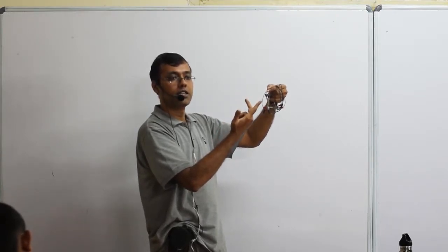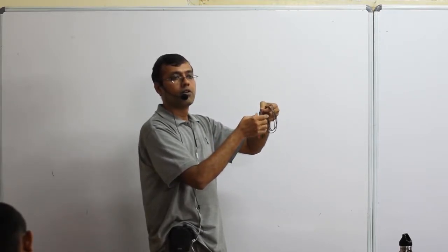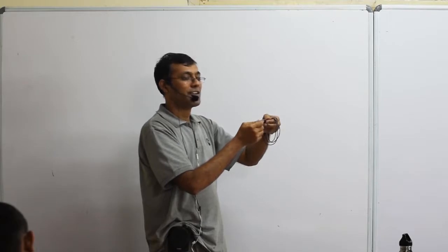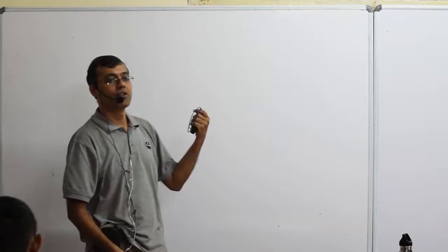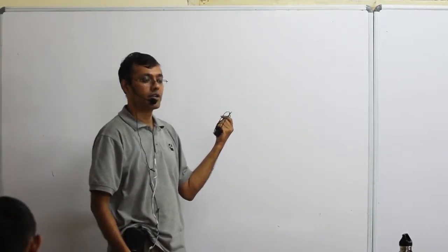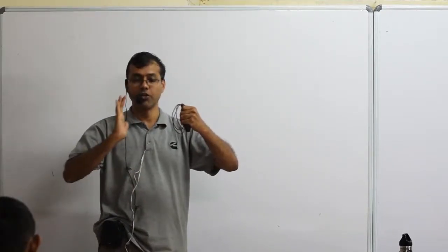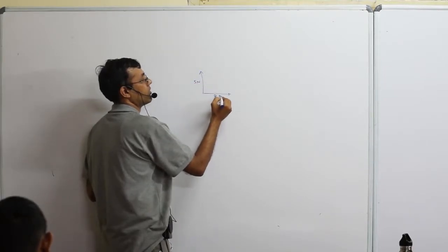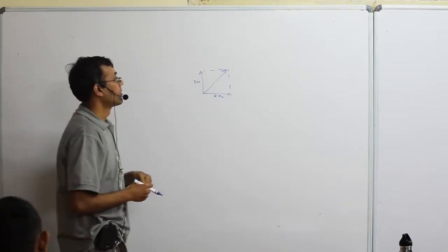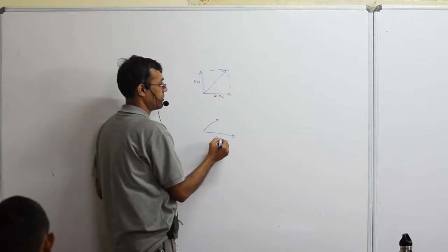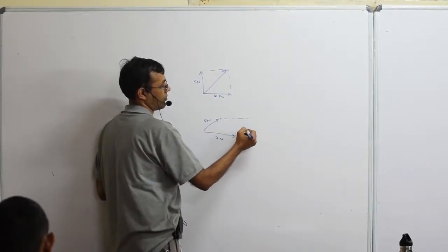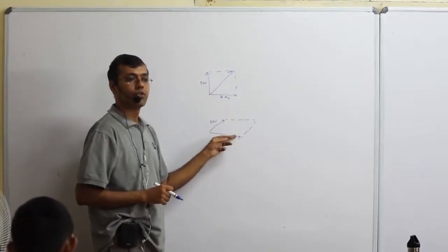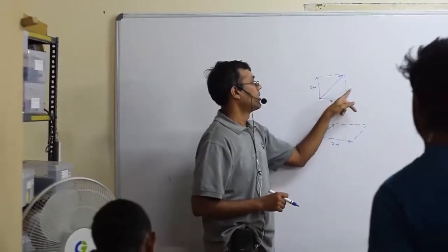Two forces are acting at the same time. You cannot simply add 5 N plus 2 N — it depends on the direction. If they are in the same direction, 5 plus 2 is correct. If opposite, it will be 3. If perpendicular, you use the Pythagoras theorem. For other angles you use the parallelogram law of vectors. Luckily in these cases since it is perpendicular, you will be using the A² plus B² formula.